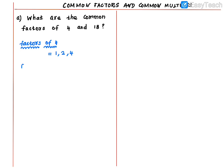Next, find the factors of 18. Check each table: 1 divides 18, 2 divides 18 (2×9=18), 3 divides 18 (3×6=18), 4 does not (4×4=16, 4×5=20), 5 does not, 6 divides (6×3=18), 9 divides (9×2=18). Once you reach half of the number — that is 9 — you can directly write the full number 18.